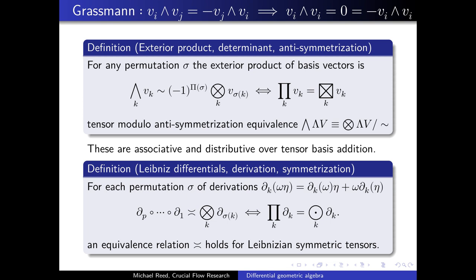Grassmann's idea for the exterior product was that if you took the product of two vectors and you interchange the order of the vectors, the sign would change. And this would have the implication that a vector product with itself would have to be zero because it would have to equal its negative. And this concept can be generalized to any number of vectors. And it turns out that the determinant is actually a special case of this operation. And so this exterior product is a fundamental operation, which is the foundation of linear algebra and determinants, and is essentially based on the anti-symmetrization that Grassmann proposed. And this operation is associative and distributive over the tensor basis addition.